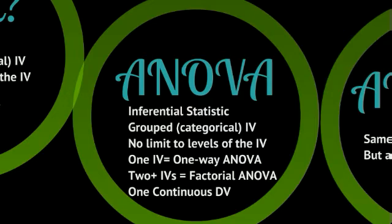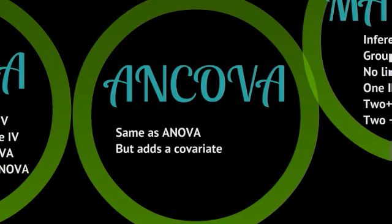A factorial ANOVA has two or more independent variables, each with their own levels or groups, and one continuous dependent variable. So while the independent variable grows in its ability to handle more complexity, the dependent variable stays the same — just one. Going further, ANCOVA is the same thing as an ANOVA but adds a covariate. Covariates are continuous or dummy-coded variables that are not the major research question but are assumed to carry some level of error variance or noise, so you control for them to make all else equal.